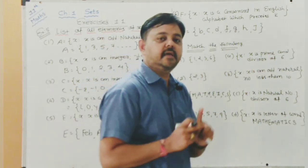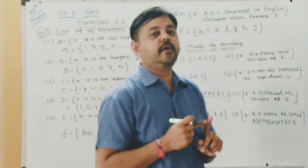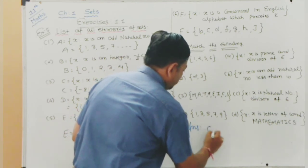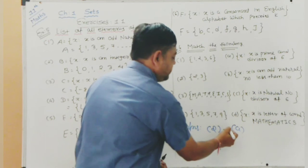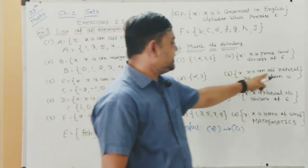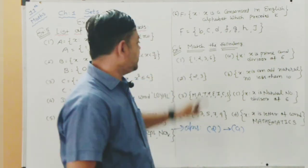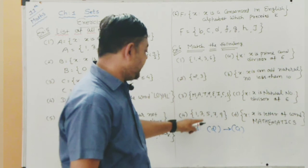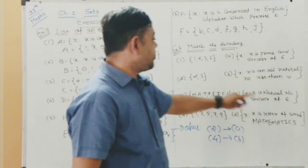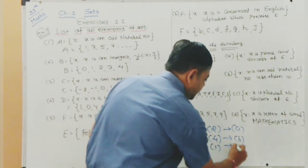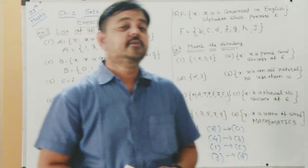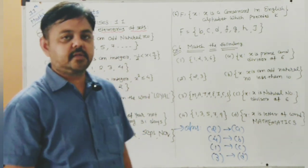Now Example number 6: match the following. The left side has sets and the right side has options to match. Set with {2} matches option A. Set of odd natural numbers less than 10 matches the corresponding option. Natural number divisors of 6 match option C. The set for the word MATHEMATICS matches option D. Exercise 1.1 is now complete.